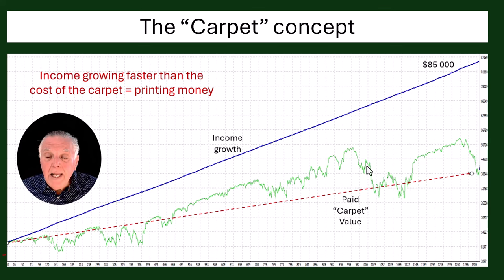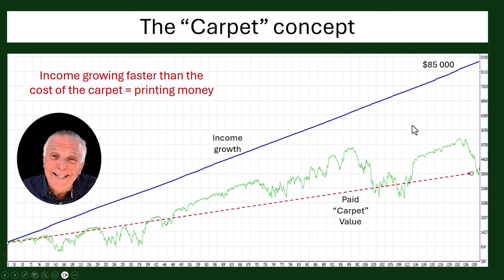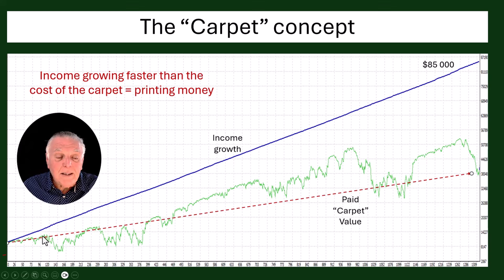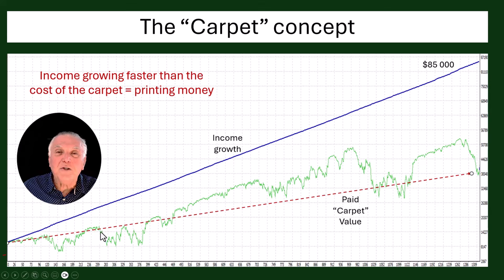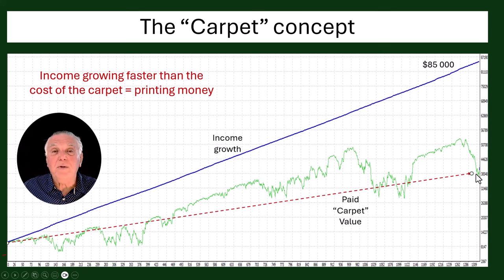Drawing a straight line through the open deals shows it going up — which is good — but at a much slower rate than income growth. When that happens, you're printing money. In the beginning the rates were actually negative, meaning the account had to fund those open trades. Then slowly income started financing them, which is what we want. The paid carpet is basically that averaged green line.